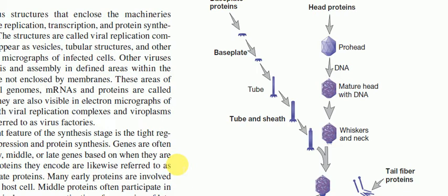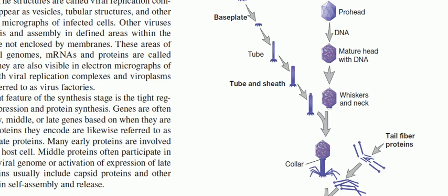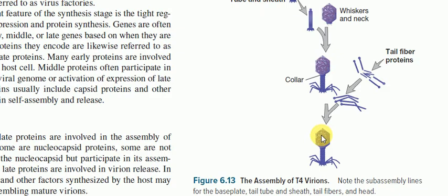Once a cell is infected by any virus — here we're showing a bacterial phage — translation first results in a prohead being built, then nucleic acid is packed inside, then whiskers and neck are joined, all translated by ribosomal proteins. Once the whole machinery is built, the assembled virus is ready inside the cell, and it would create enormous effects that would disrupt the cell's machinery.